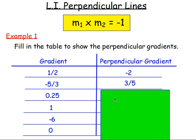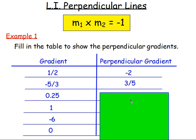Next: 0.25. This is a bit trickier because you're thinking about how you'd turn that upside down. One way is to imagine it as a fraction — 0.25 is just one quarter, or one over four. Turn one over four upside down and you get four over one, which is four. Remember to change the sign, so the perpendicular gradient is negative four.